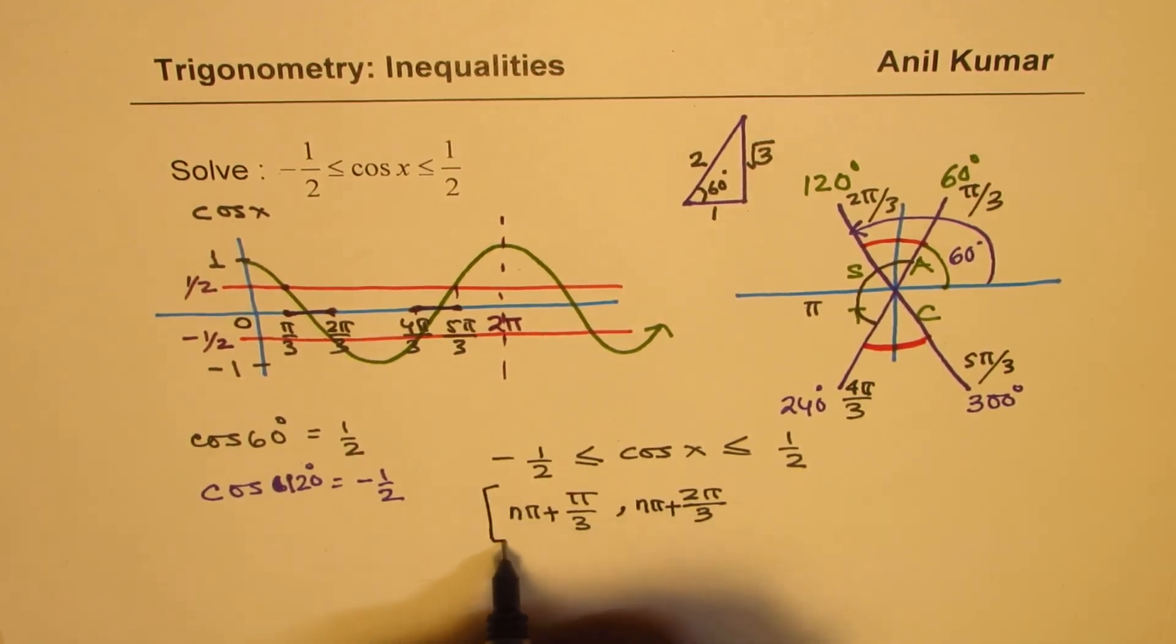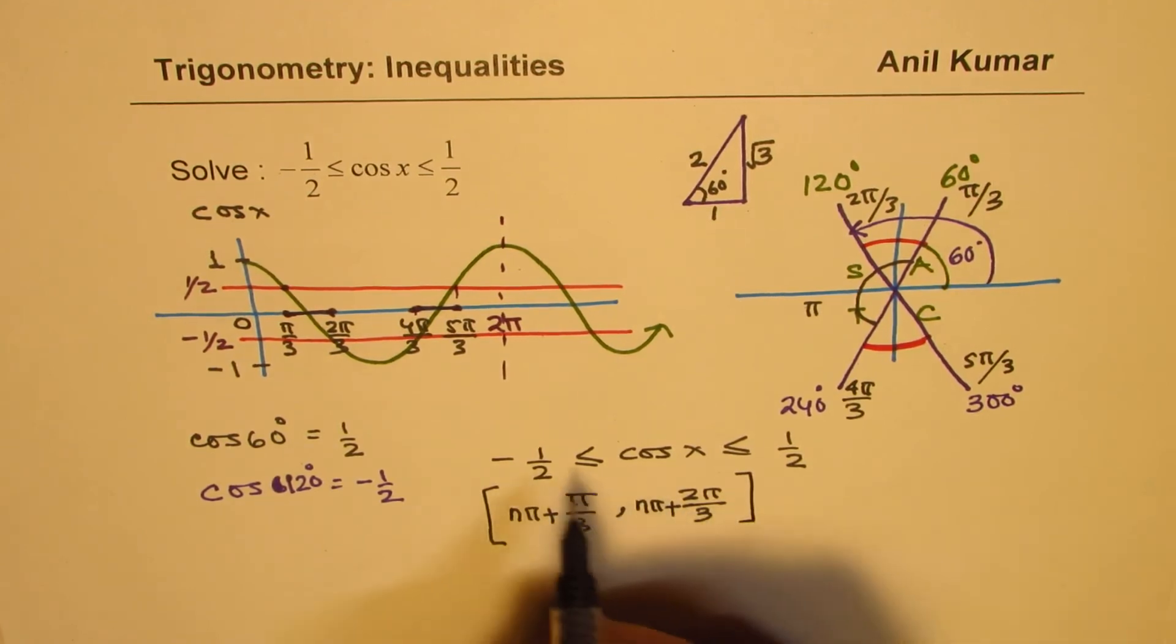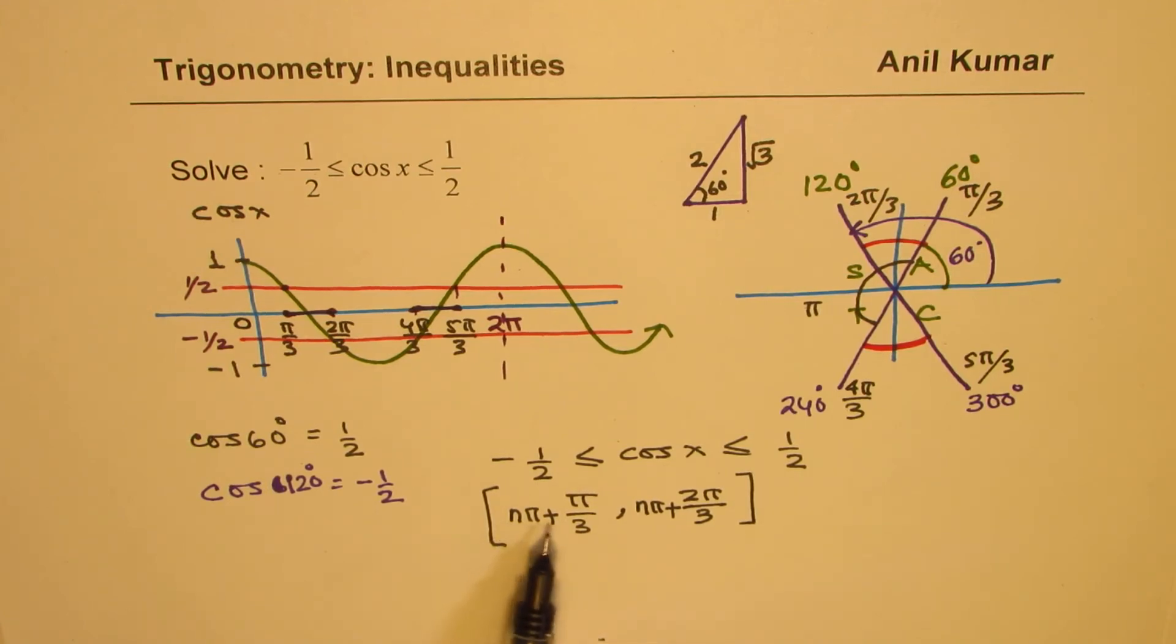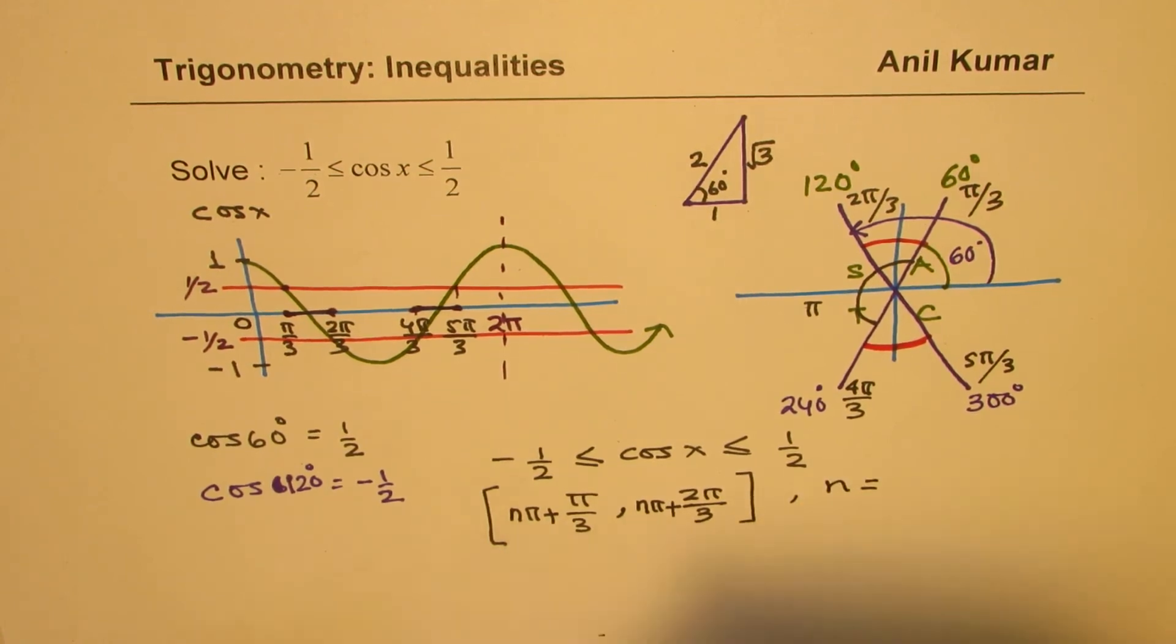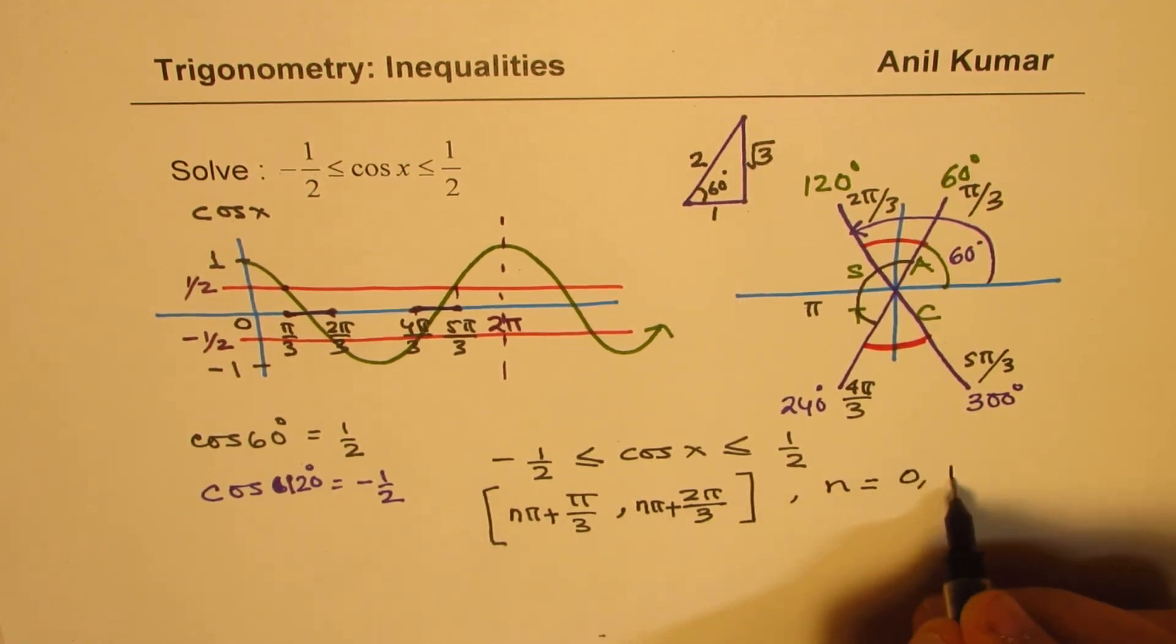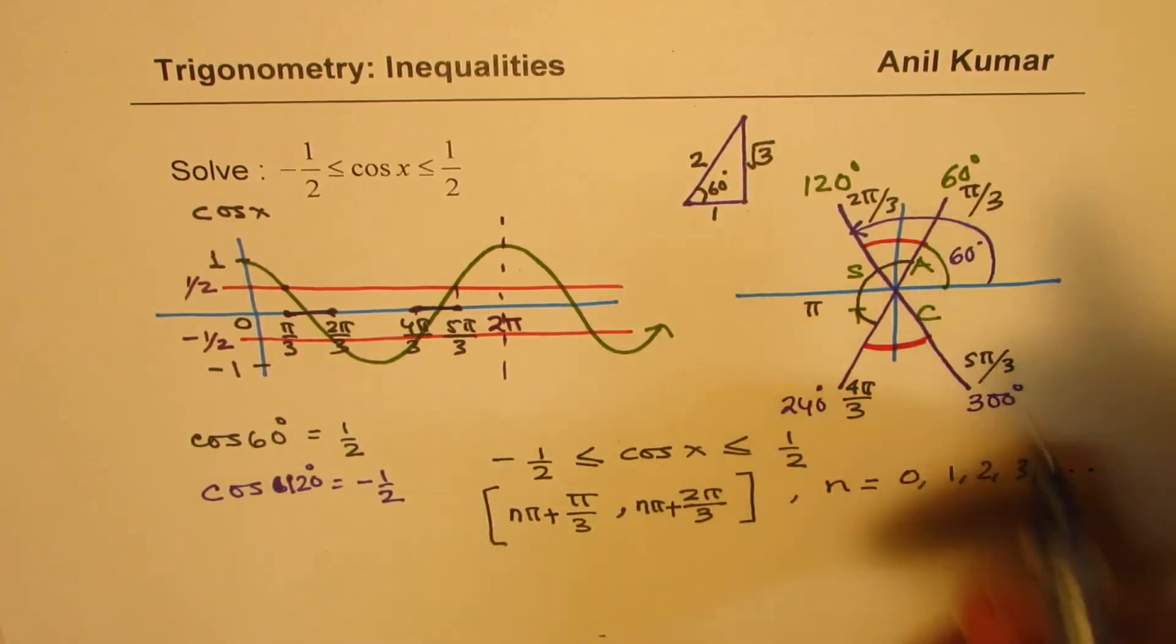Including these points, since we have this inequality included. So in radians, I could provide the answer as nπ + π/3 to nπ + 2π/3, cos(x) is within minus half and plus half, where the value of n could be 0, 1, 2, 3 and so on.